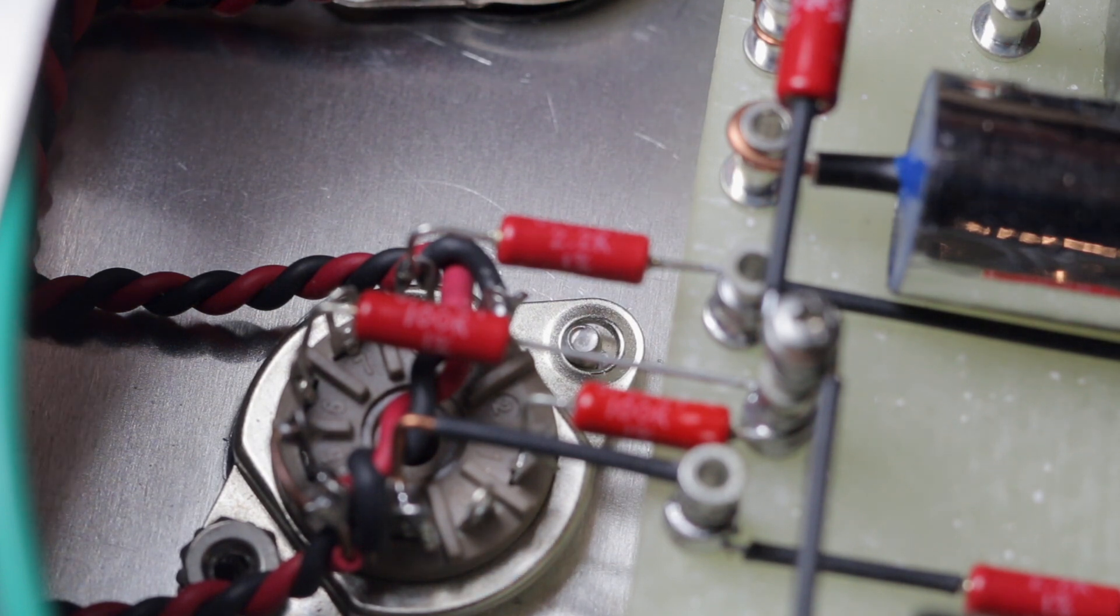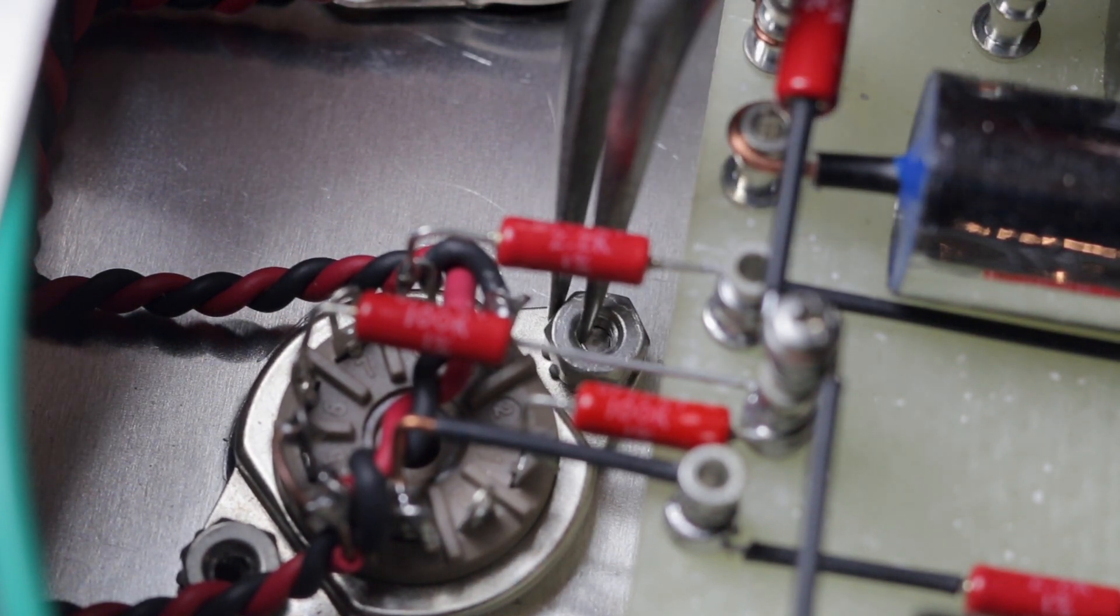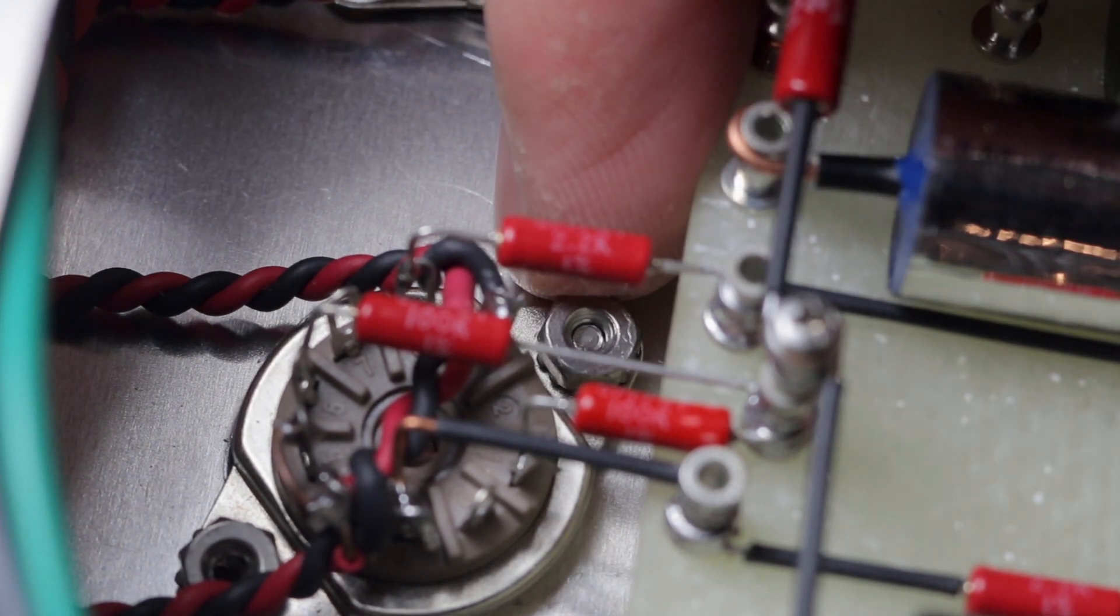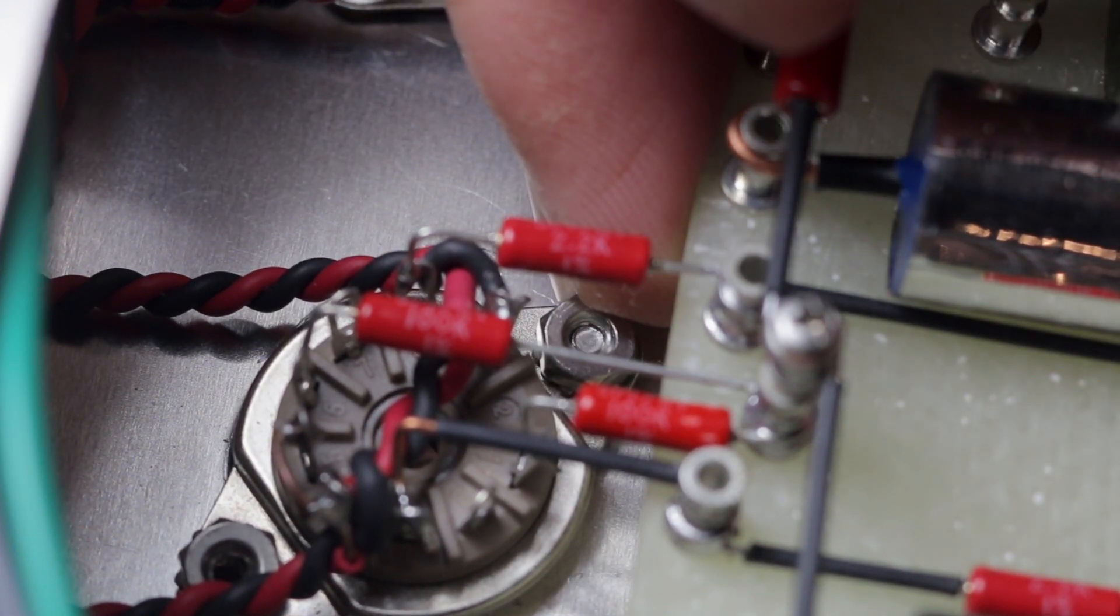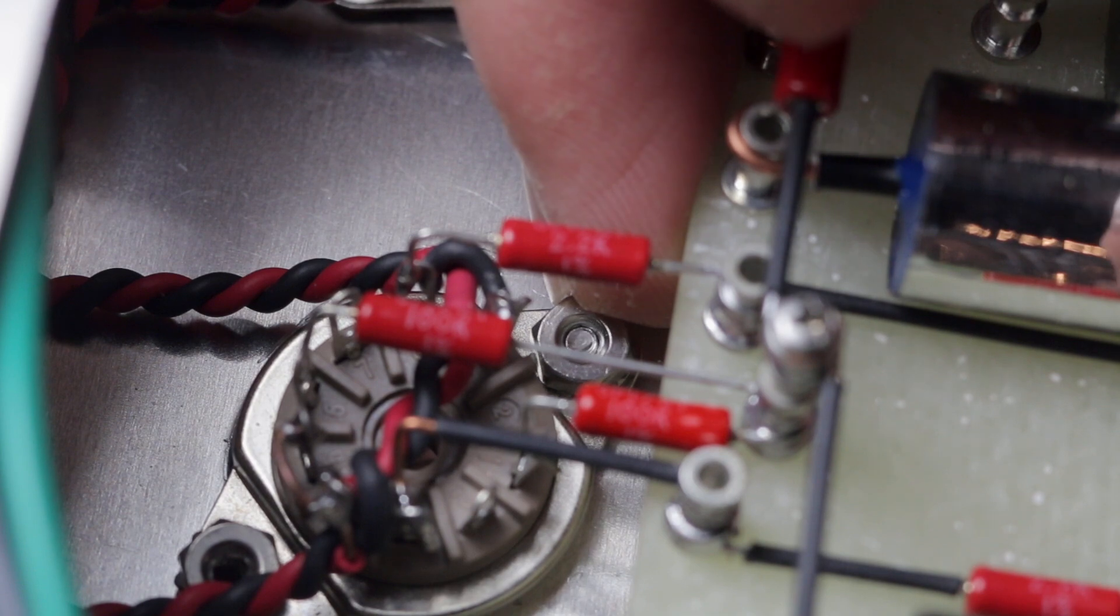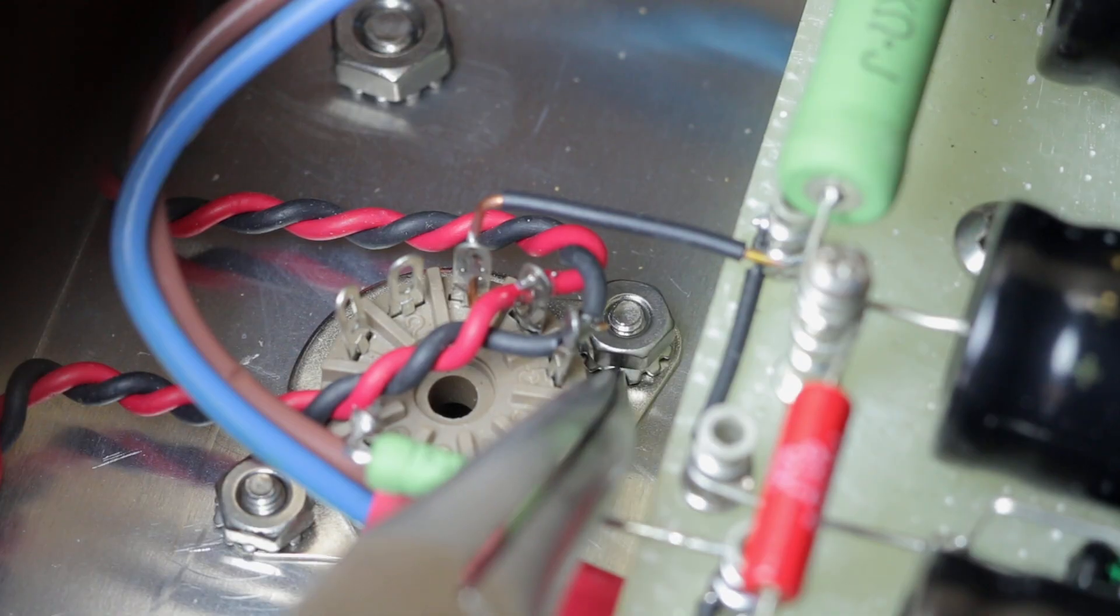In order to fix the tube shield base, you have to insert the bolt from the top of the chassis, and that means that screwing on the little nut is going to be very tedious.